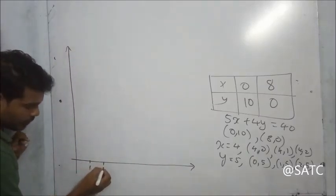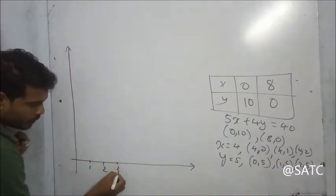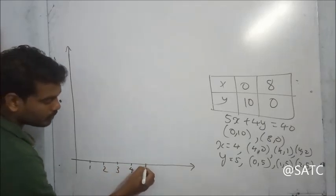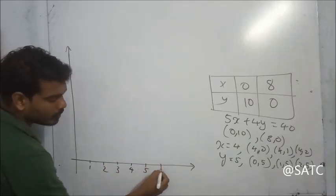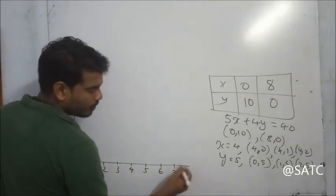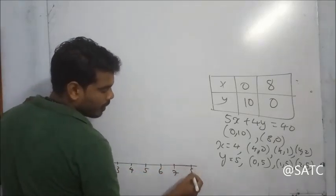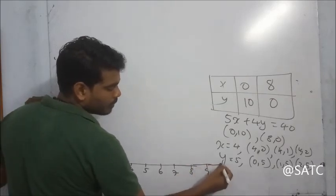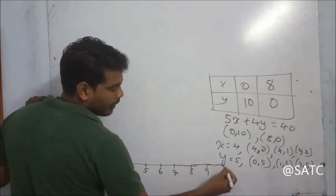Counting units on the axes: 1, 2, 3, 4, 5, 6, 7, 8, 9, 10.